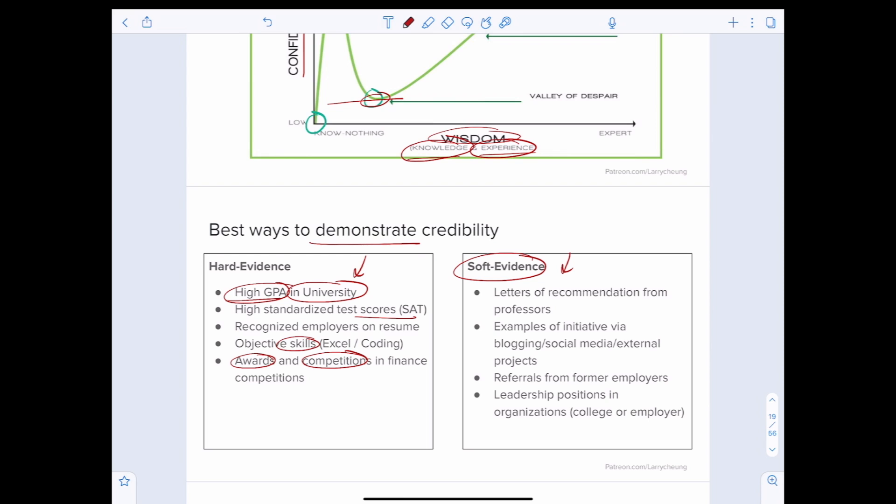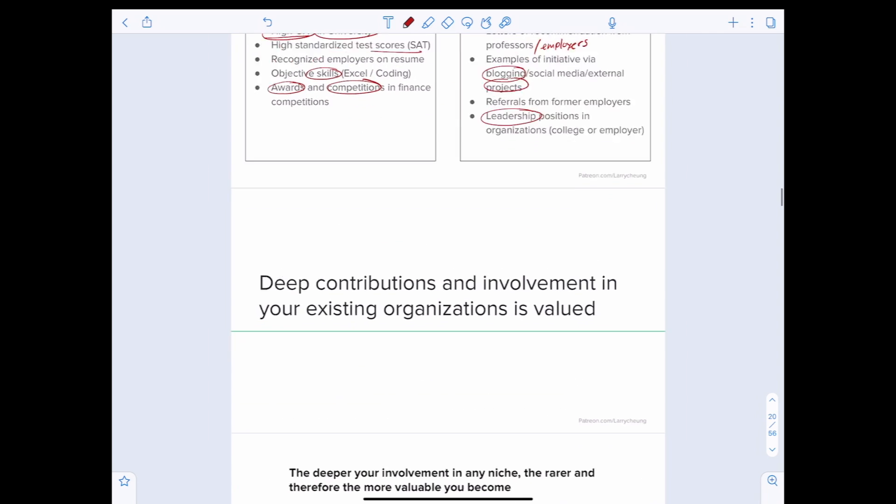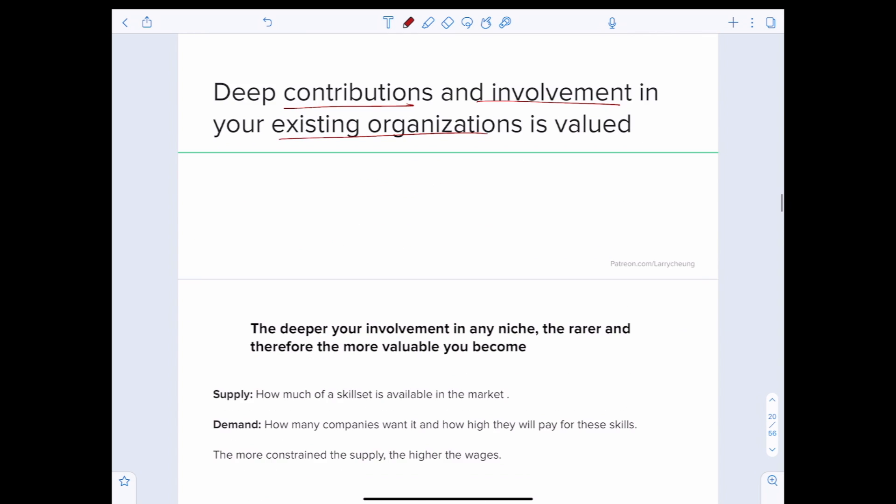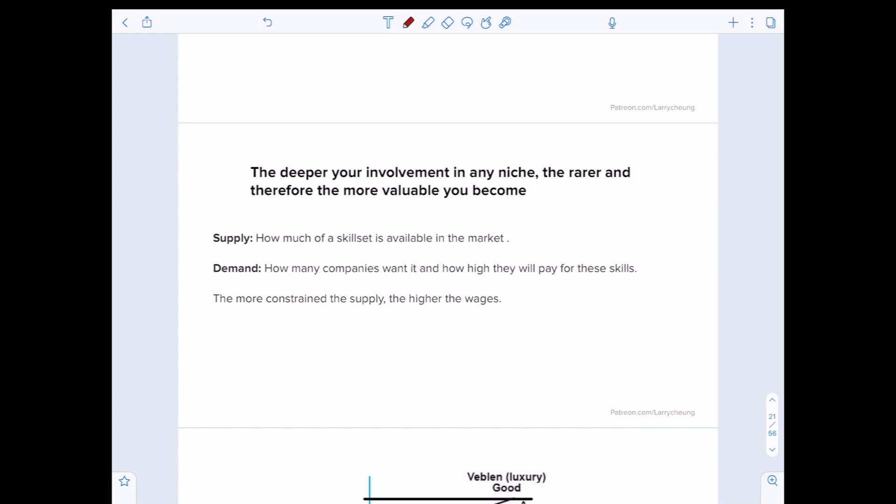More importantly, it's also important to demonstrate soft evidence. What that means is getting letters of recommendations from professors, from employers, having examples of your independent work on blogs, through external projects, and demonstrating your ability through leadership positions in organizations as well. That all demonstrates credibility. Deep contributions and involvement in your existing organizations is valued. The deeper your involvement in any niche, the rarer and therefore the more valuable you become. It's really also just supply and demand. How much of a skill set is available in the market? That's the supply. How many companies want it and how much they are willing to pay for it? That's the demand.